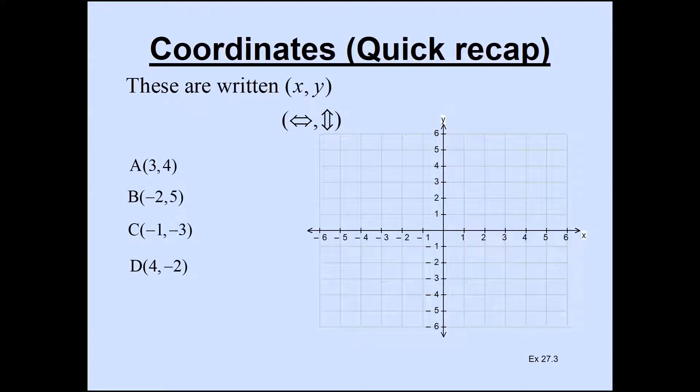Now you should already know what coordinates are and how they are represented. So the coordinates are written in the form x comma y in parentheses. Remember it's x followed by y in alphabetical order. So x is the horizontal value and the y is the vertical value that you read from the grid.